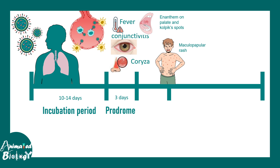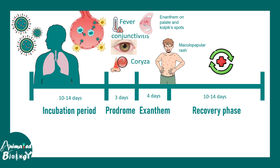About four days after the prodrome phase, a maculopapular rash appears — this is the exanthem stage. After this, viral load declines and a recovery phase begins, lasting approximately 10 to 14 days. Once a person recovers from measles, they gain lifetime immunity.